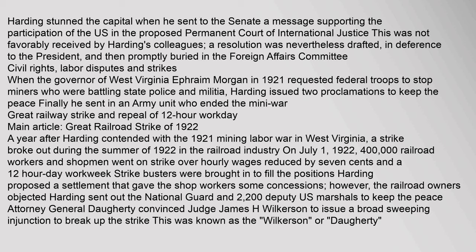When the Governor of West Virginia, Ephraim Morgan, in 1921, requested federal troops to stop miners who were battling state police and militia, Harding issued two proclamations to keep the peace. Finally, he sent in an army unit that ended the mini-war. A year after Harding contended with the 1921 Mining Labor War in West Virginia, a strike broke out during the summer of 1922 in the railroad industry.